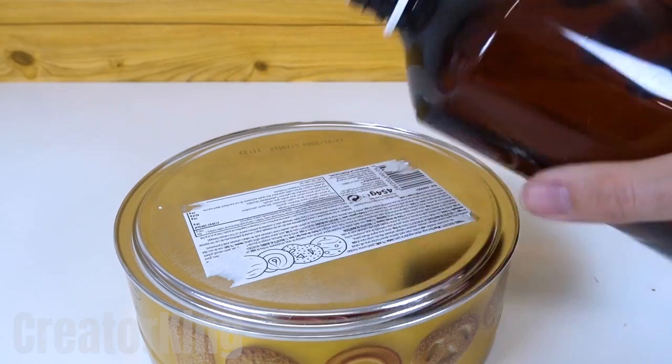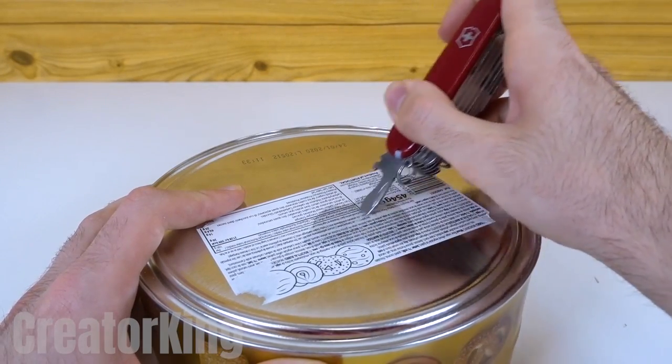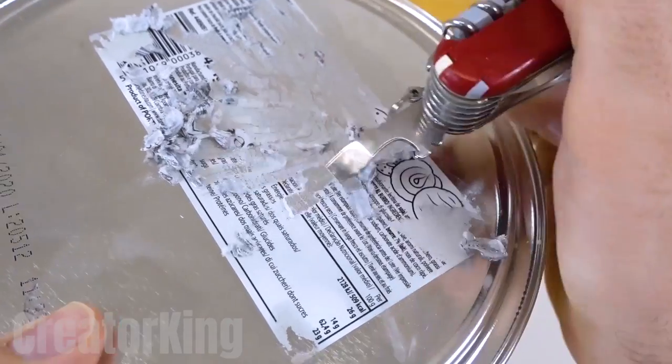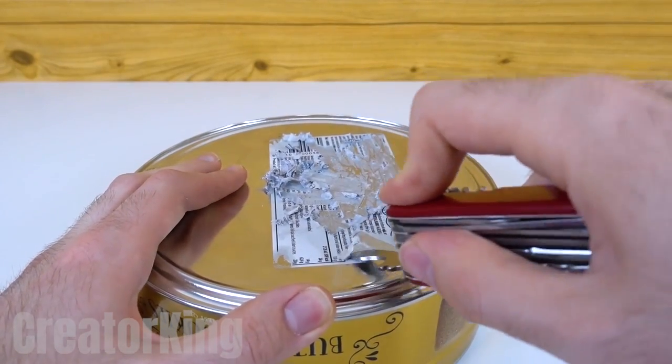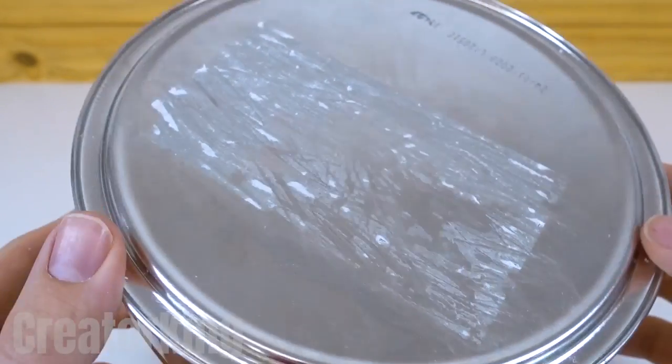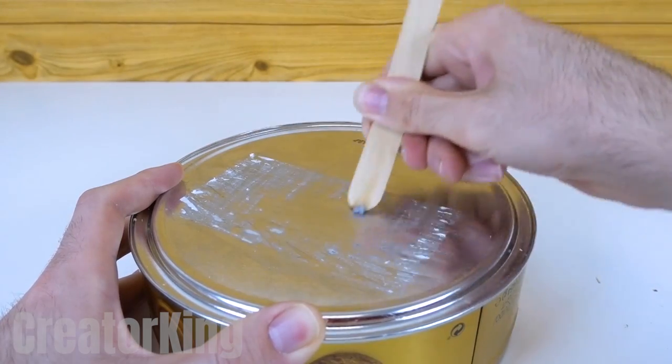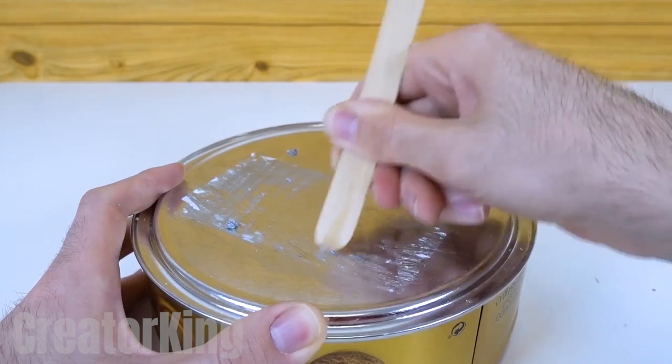Don't forget to use alcohol to remove that horrible label that all packaged products come with. You can use a tool like this to scrape off the label. I hope you have more patience than me because it will take a long time to remove it. A popsicle stick can also be useful.